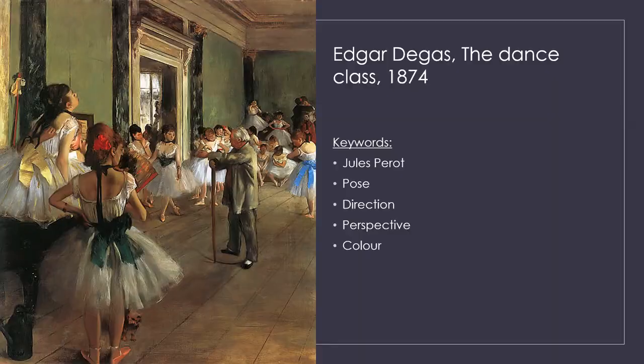This painting is called 'The Dance Class' from 1874, and it is one of Degas's most famous paintings. The subject matter is ballerinas practicing or rehearsing in a dance hall. The scene has the illusion of being painted from a raised position, so as a viewer we feel we are looking down on the whole ballet class, which enables us to view the full room.